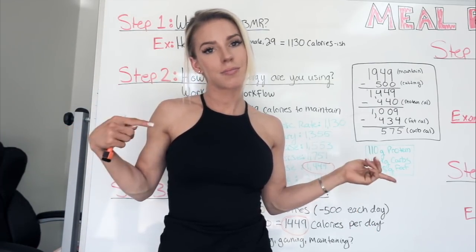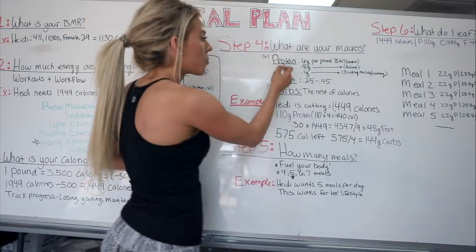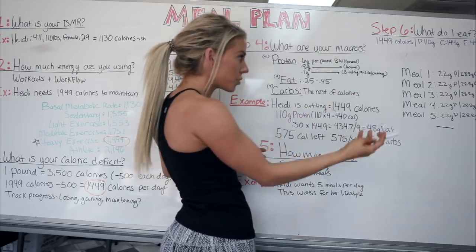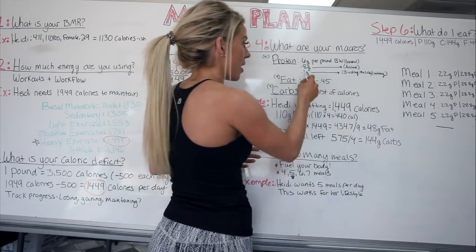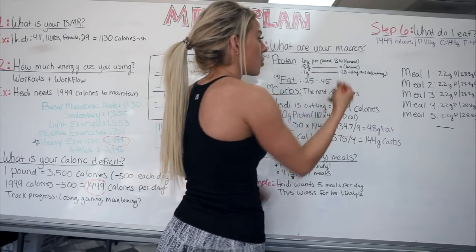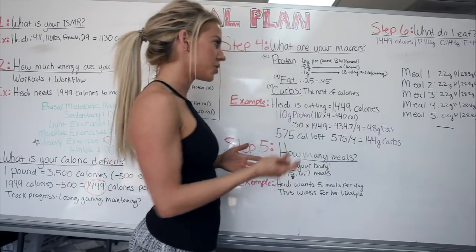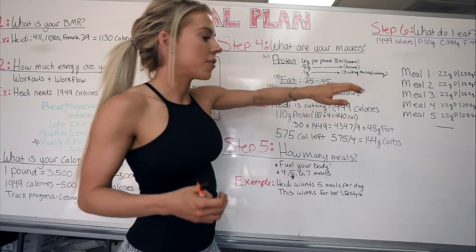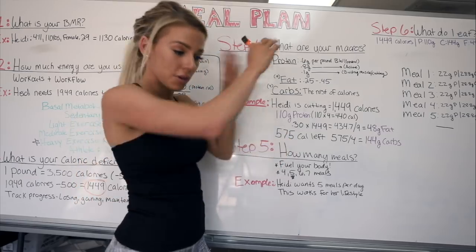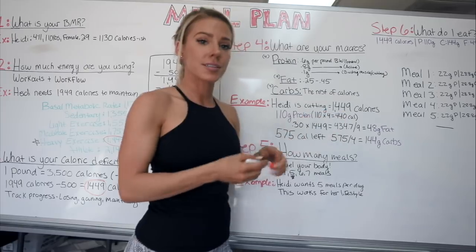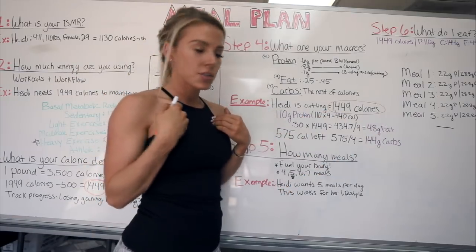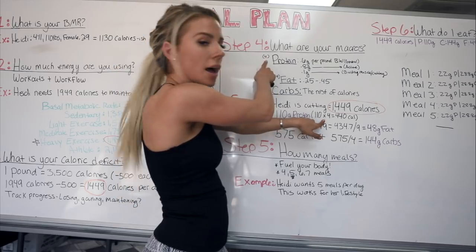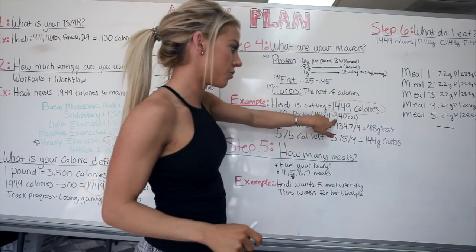Step four is figuring out your macros — starting with protein. Everyone debates this, but generally: 0.6 grams per pound of body weight is a baseline, 0.8 grams if you're fairly active, and 1 gram per pound if you're building muscle or cutting. I'm 110 pounds, so I'm eating 110 grams of protein. Protein has 4 calories per gram, so 4 times 110 equals 440 calories worth of protein.